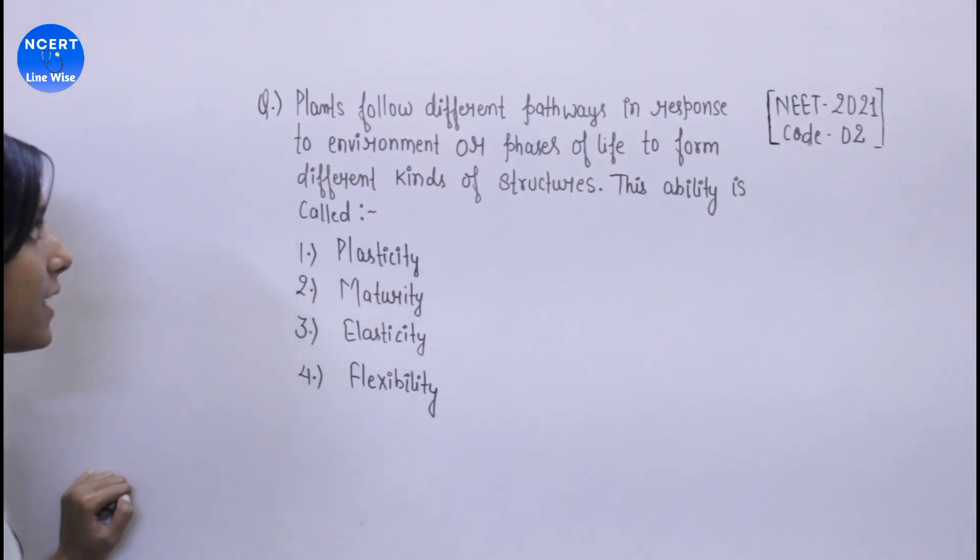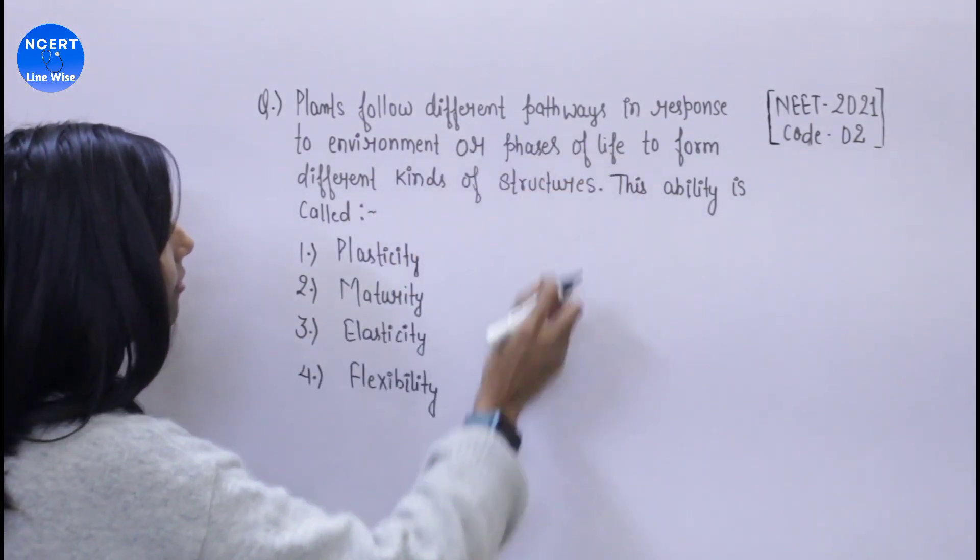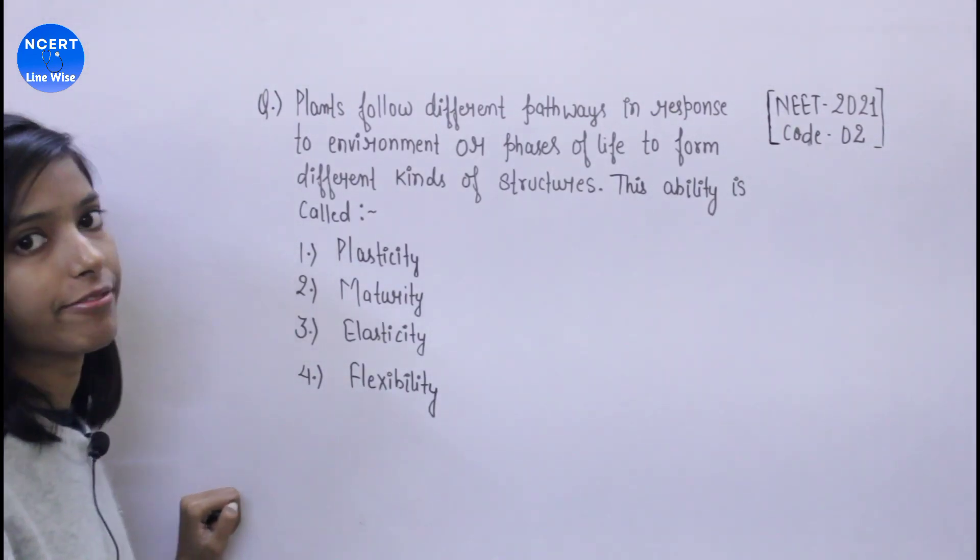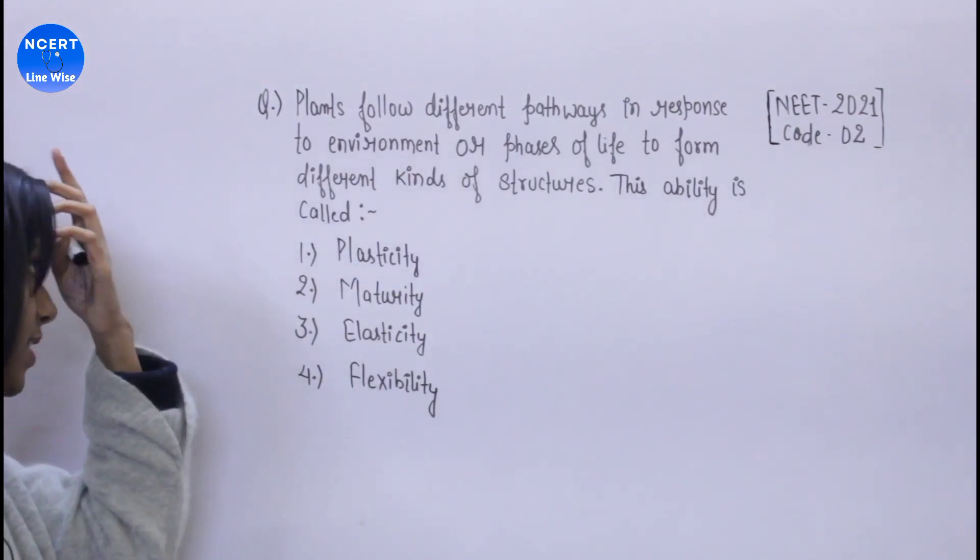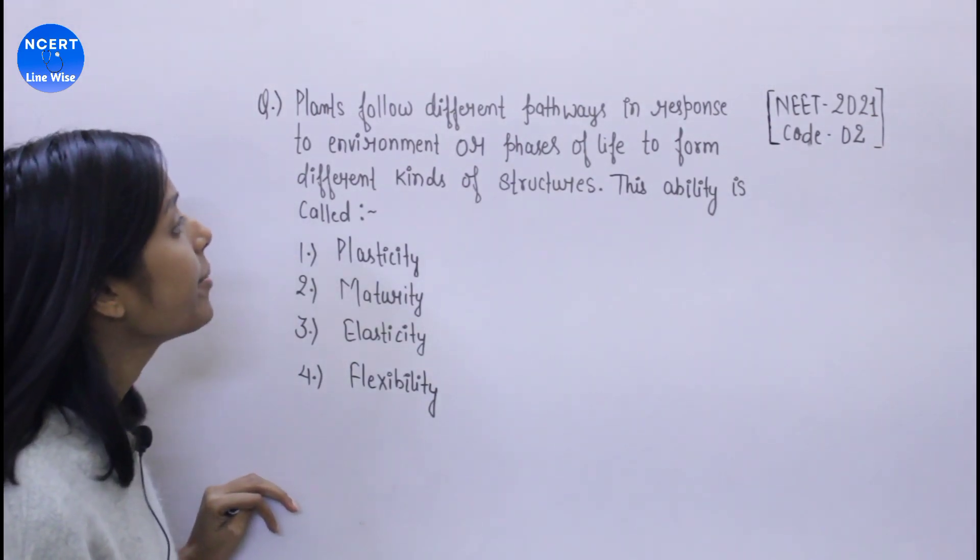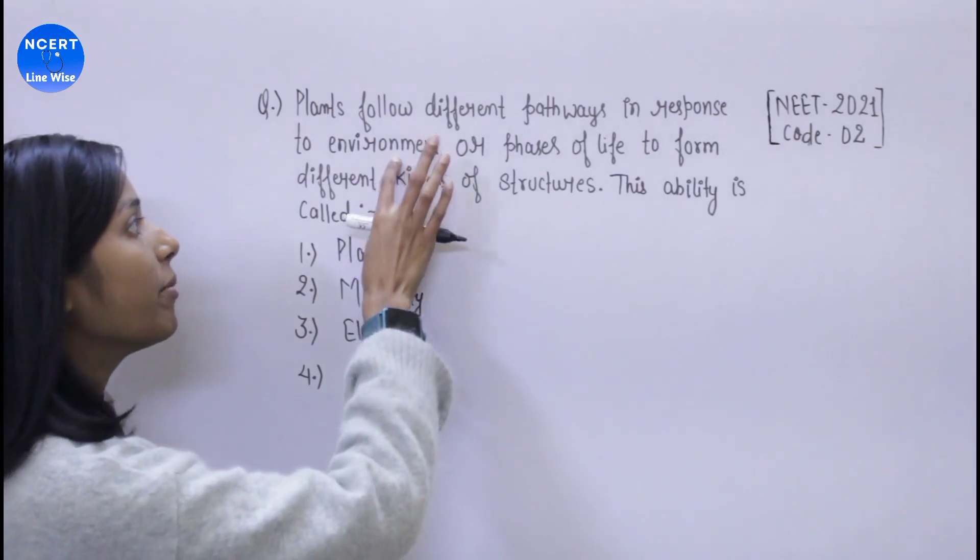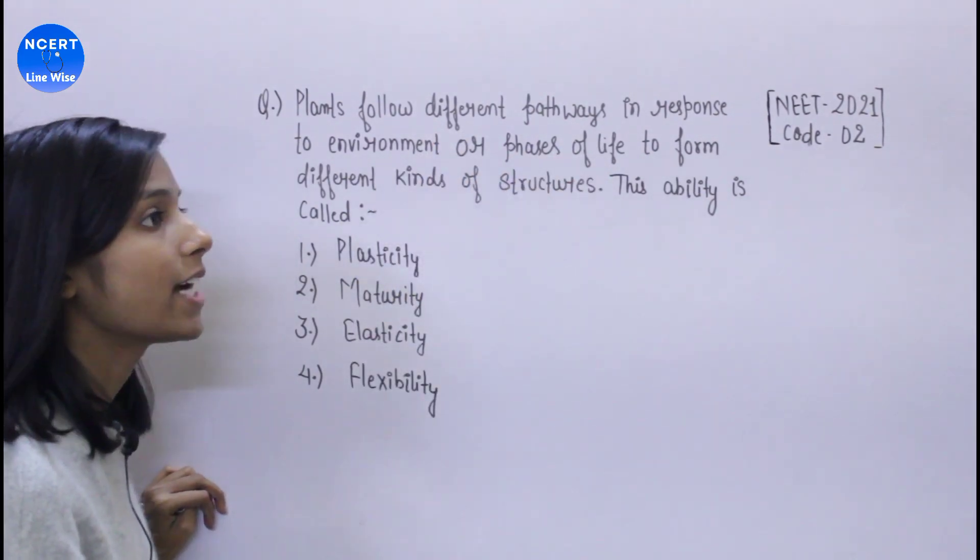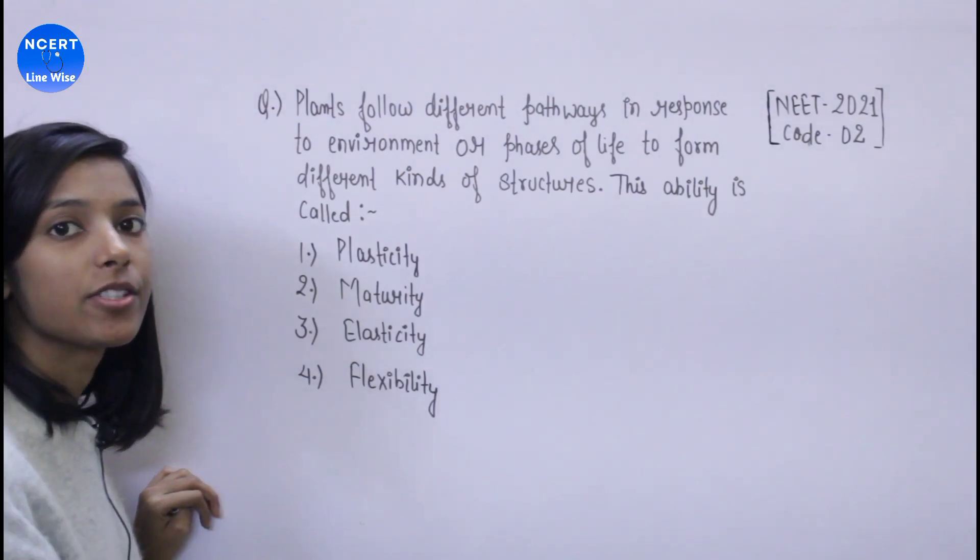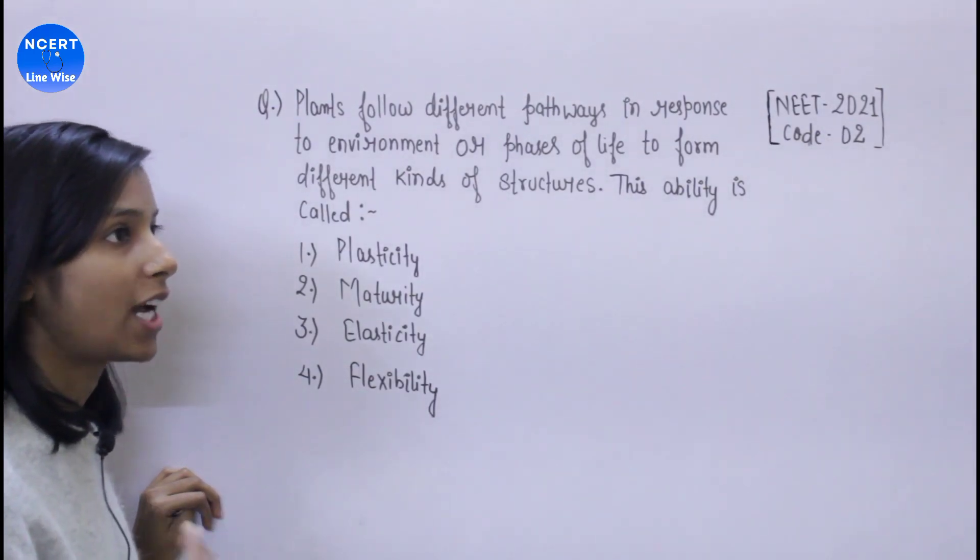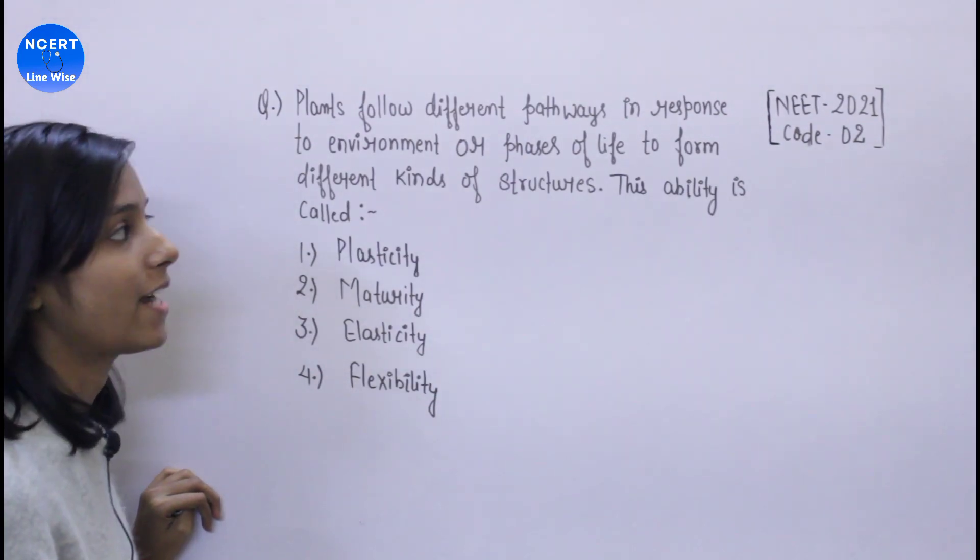In this question, plants follow different pathways in response to environment and phases of life. You can say that every phase comes in life - adult phase, child phase, and juvenile phase, like for plants.